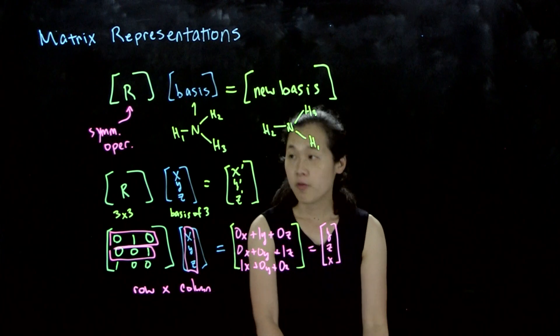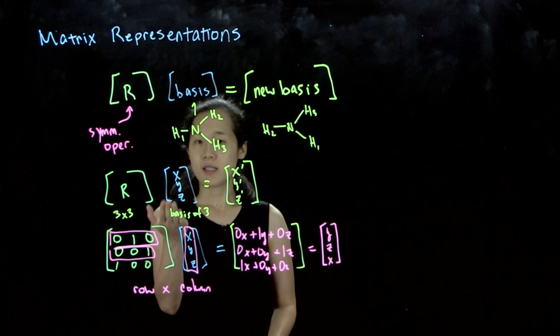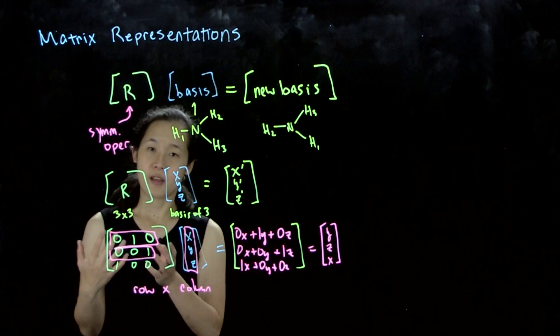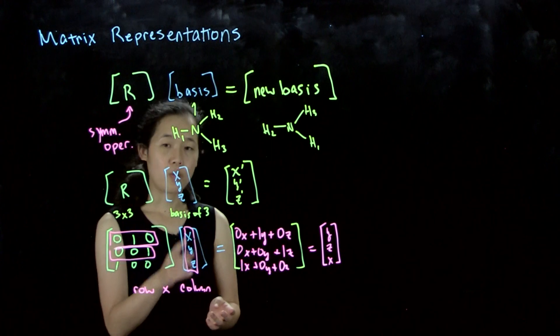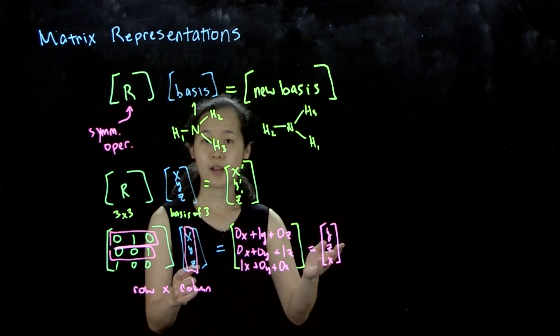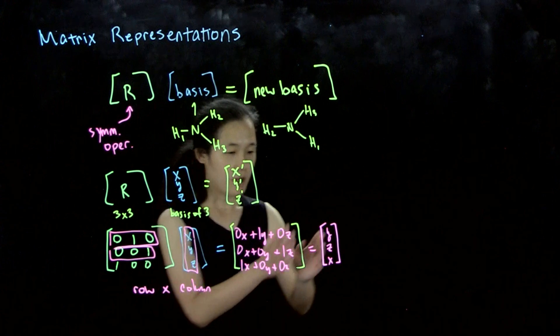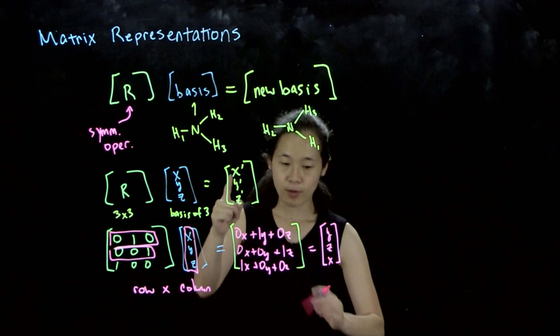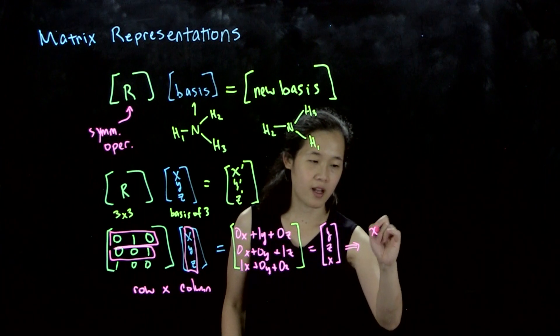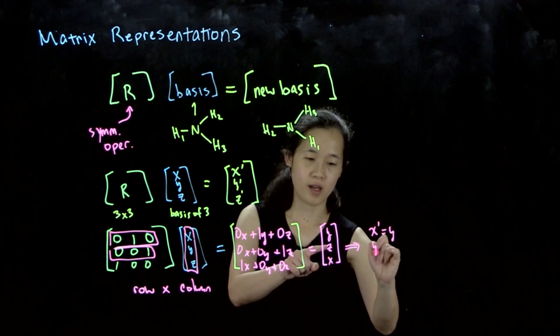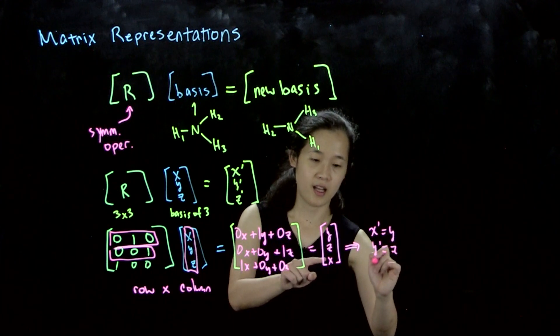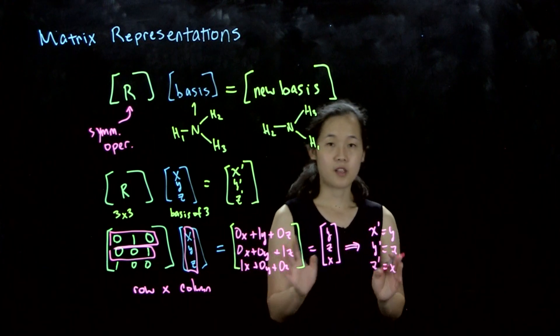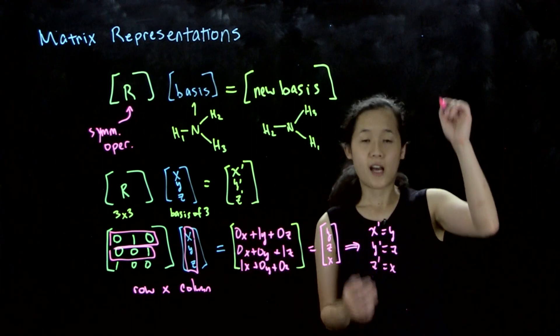If we're looking at how x, y, and z transform under certain symmetry operations, we can represent each symmetry operation as a 3x3 matrix. We want to find out how x, y, z become our new x, y, z. Going back to the original scheme, this means that x' equals y, y' equals z, and z' equals x.